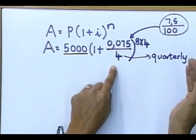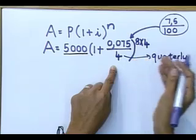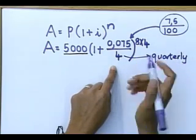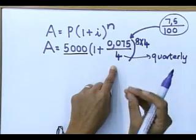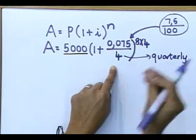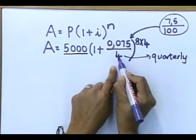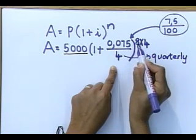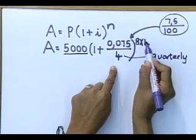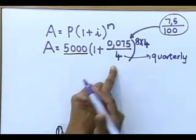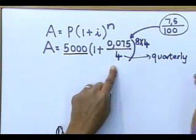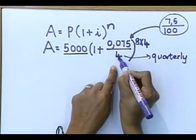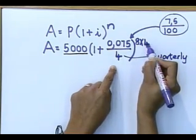If they said semi-annually or half-yearly, you will take your interest rate and divide by two, and take your number of years and multiply by two. If they said monthly, you will take your interest rate, divide by 12, and take your years and multiply by 12.